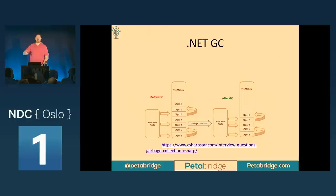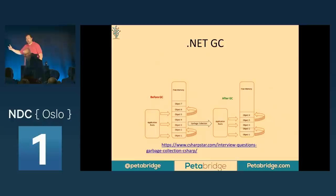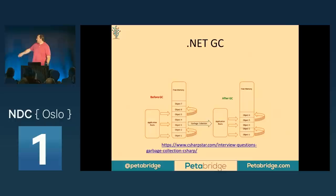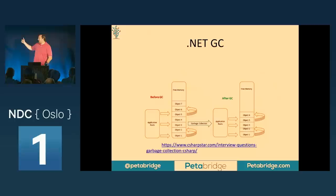After the garbage collector runs, those objects that are arrayed in memory all get compressed together again — a process called compaction. This compaction of free memory is designed to help accelerate the allocation of new objects in the future. The garbage collector is also responsible for trying to compact memory together, and that compaction process is really essential for making your applications fast. If objects are all available sequentially in memory, you can take advantage of hardware-level caching and faster sequential pointer access. If memory is highly fragmented, you lose those benefits and see a noticeable performance hit.